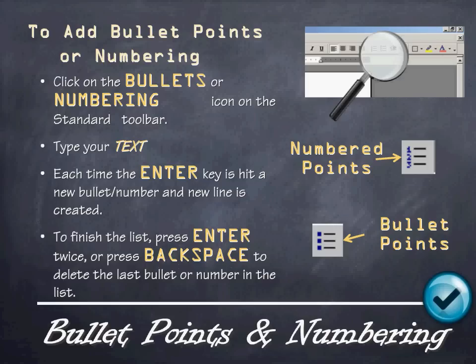Next up, bullets, points, and numbering. To add bullet points or numbering, click on the Bullets or Numbering icon in the standard toolbar. Type your text, and each time you hit Enter, a new bullet or number will be added to the line below. To finish the list, press Enter twice or press Backspace, which will delete the last bullet or number. If you've already typed your document and want to add bullet points or numbers, highlight the text and then select the Bullets or Numbering icon.